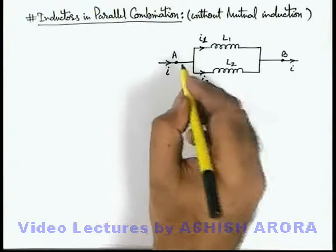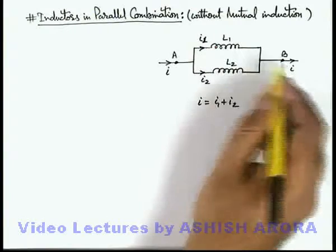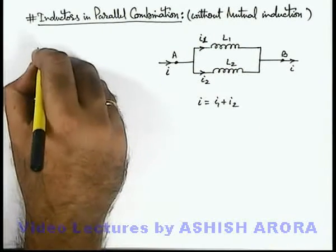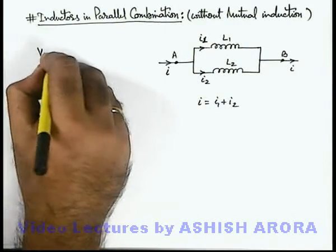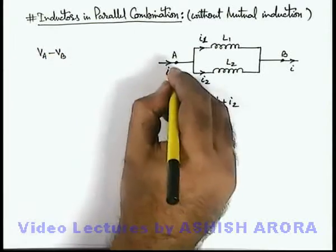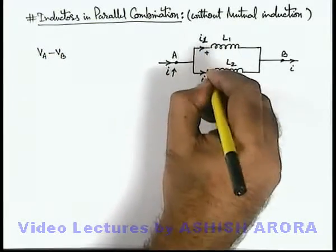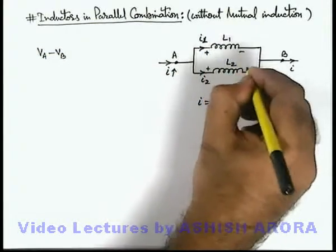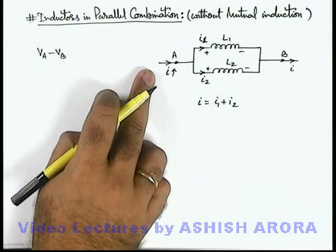And if we talk about the potential difference across terminals A and B, or EMF induced here, we can write potential difference across A and B, VA minus VB. If current is increasing, the EMF induced will be like this, which will oppose the increment in current.